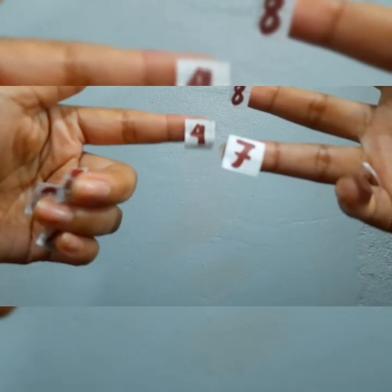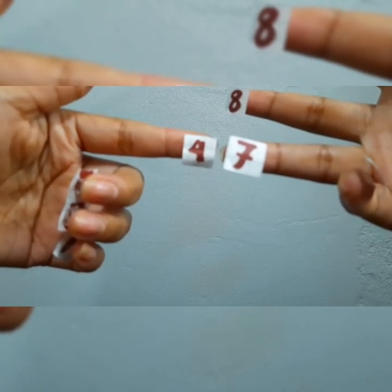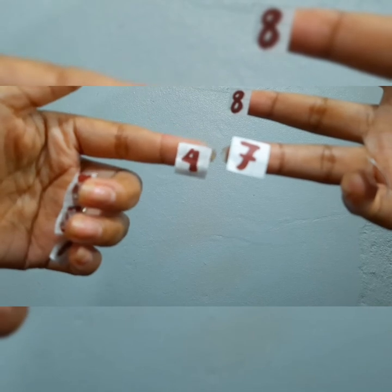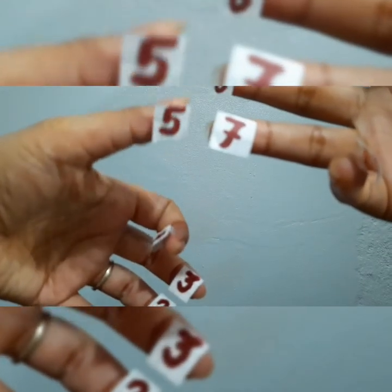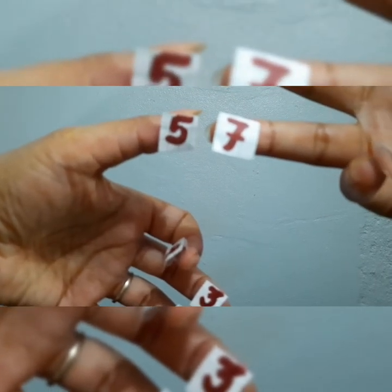Add another 7. 21 plus 7 equals 28. 7 times 4 is 28. How about 7 times 5? 28 plus 7. 7 times 5 equals 35.